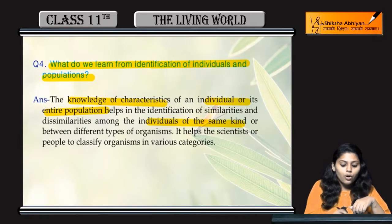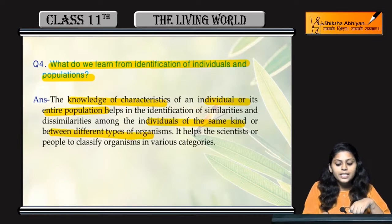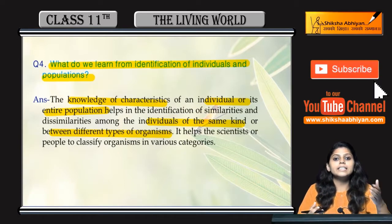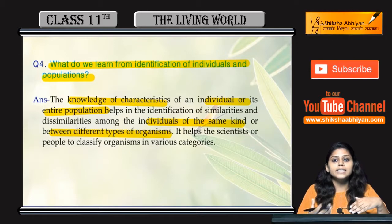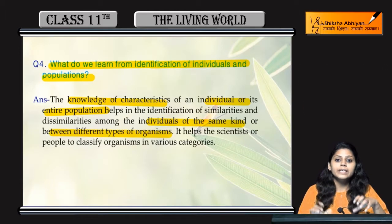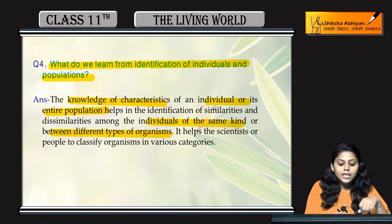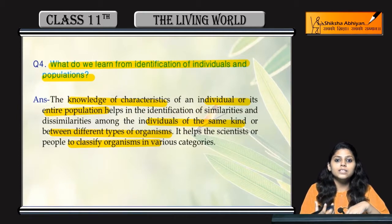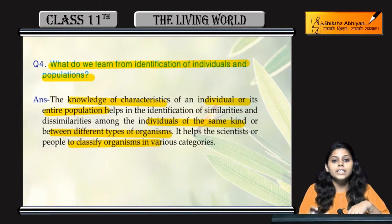Within the individuals of same kind और between different types of organisms — कितने similar और कितने related हैं, कितने dissimilar हैं means related नहीं होंगे। इसकी वजह से organisms को classify करना easy हो जाएगा, depending upon the similarities and differences of those individuals or population.